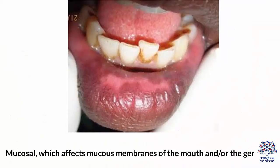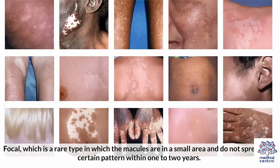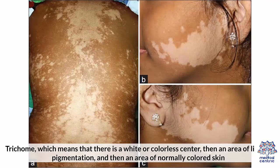Mucosal vitiligo affects mucous membranes of the mouth and/or the genitals. Focal, which is a rare type, in which the macules are in a small area and do not spread in a certain pattern within 1-2 years. Trichrome, which means that there is a white or colorless center, then an area of lighter pigmentation, and then an area of normally colored skin.